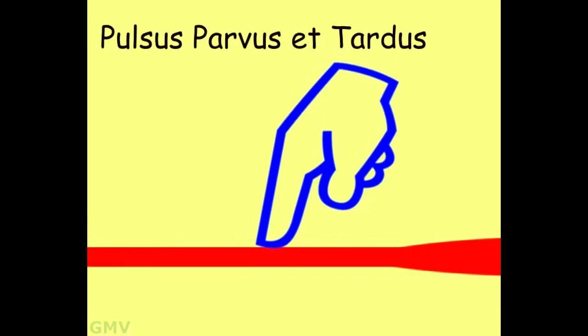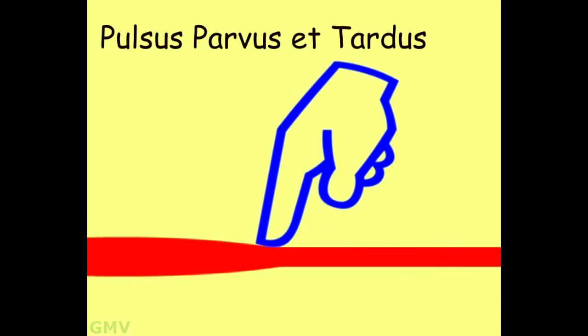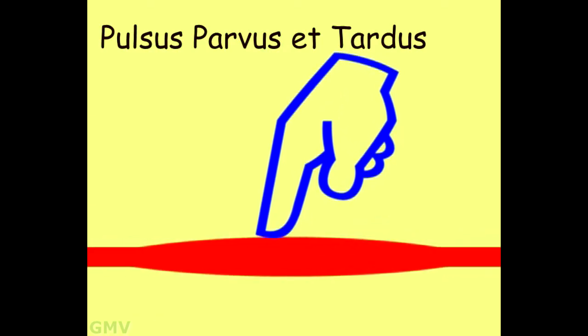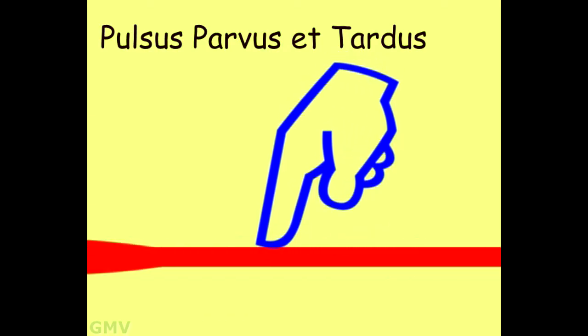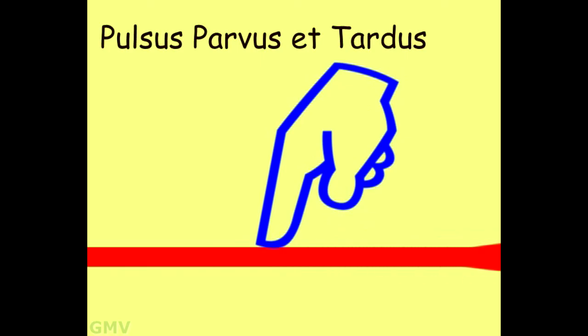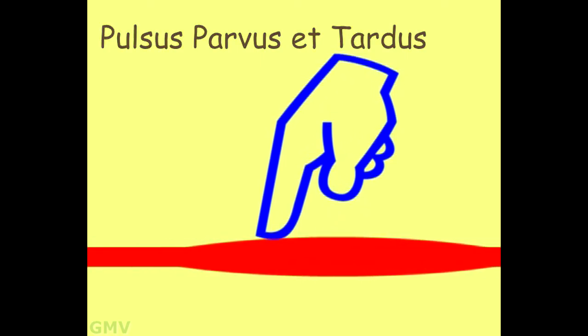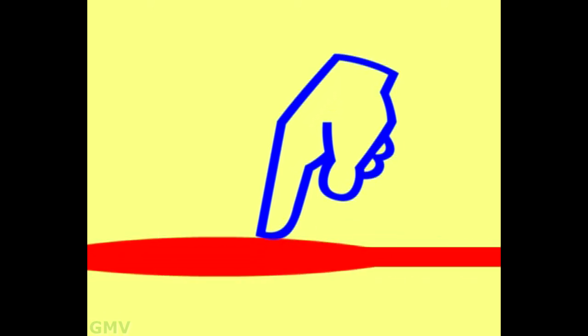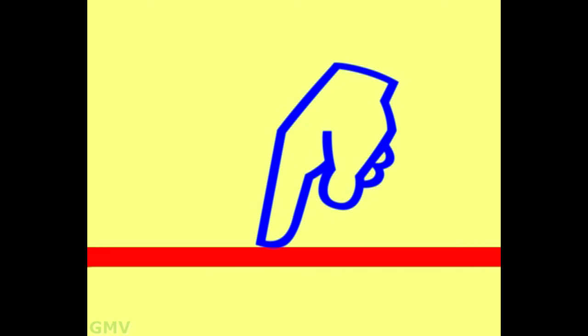This is the low volume pulse, which rises slowly and falls slowly. Note the slow rise and the slow fall and the low amplitude. This is pulsus parvus et tardus, low amplitude and tardus, that is slow rising, seen in severe aortic stenosis. It is usually associated with a systolic thrill in the carotids.